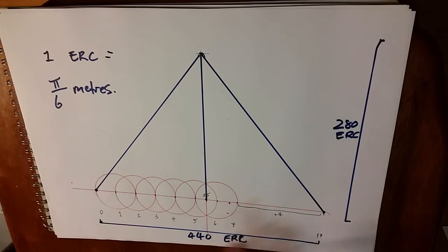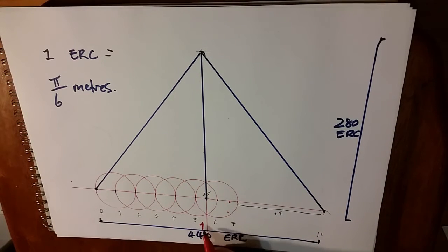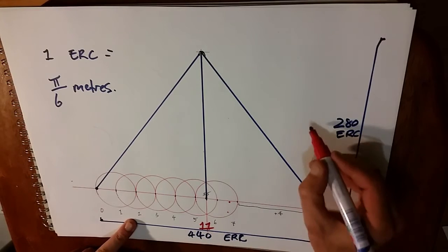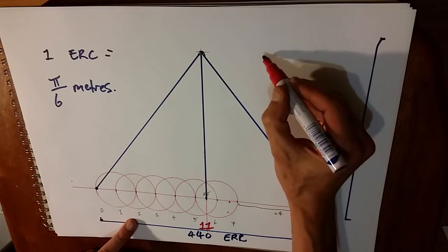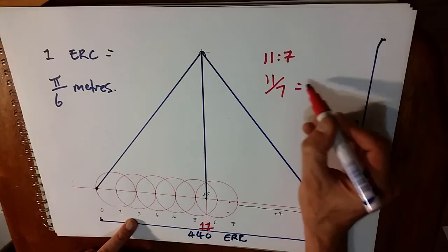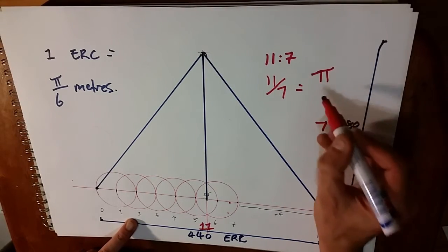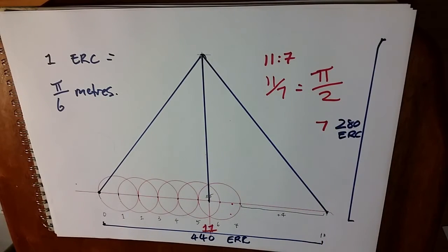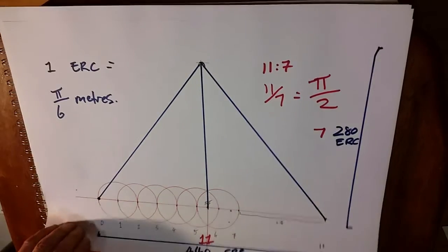So this is one method of drawing the Great Pyramid. And we have 440 over 280. And for future reference, we can reduce this number down to 11 and this to 7. And so a ratio of 11 to 7, 11 over 7, equaling pi over 2. So that's one method. And we're going to go to the next one.